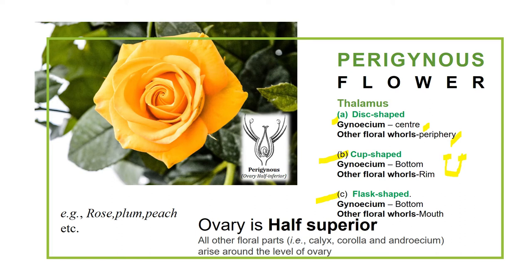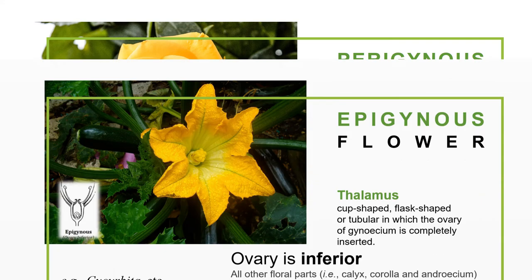In the flask shape, the gynoecium is present at the bottom and the other floral parts are present at the mouth of the flask. The ovary is half superior, and the other floral parts arise around the level of the ovary. From the picture you can see that the floral parts are present around the ovary. Examples of perigynous flowers are rose, plum, and peach.